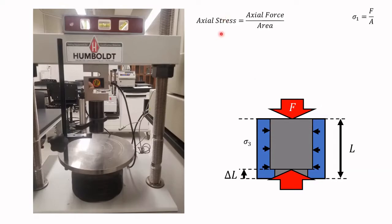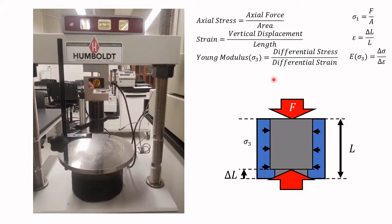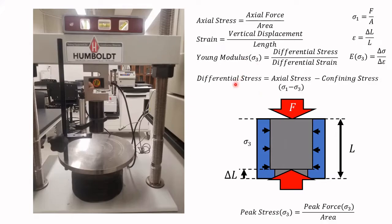Consequently we are going to have again an axial stress and a vertical strain. Our Young's modulus and peak stress are going to be a function not only of the rock properties but also of the confining stress we are applying. Another parameter useful in our analysis is the differential stress, which is the difference between the axial stress and the confining stress.